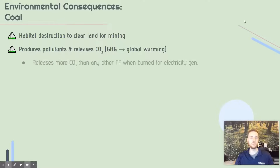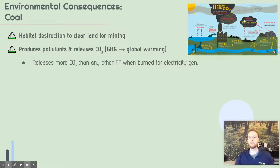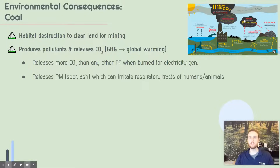Coal is the most carbon dioxide-releasing fossil fuel — that's an important point to remember. In addition to carbon dioxide, coal releases specific pollutants such as NOx, SOx, and VOCs, which we'll look at more in depth in our air pollution unit. There are also things like particulate matter such as soot or ash, which are respiratory irritants for both humans and animals in the surrounding area.